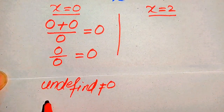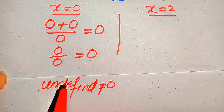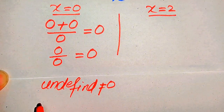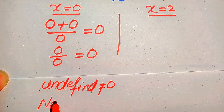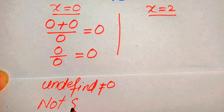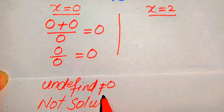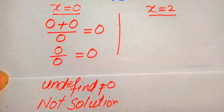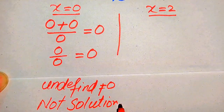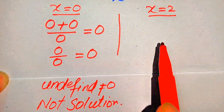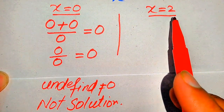Since x equals 0 gives an undefined expression, it does not satisfy our given equation. So x equals 0 is not the solution. Now we check the value x equals 2 in the same way.